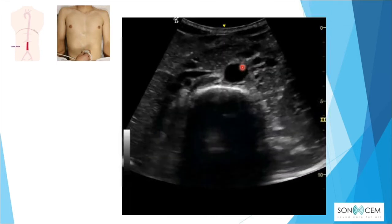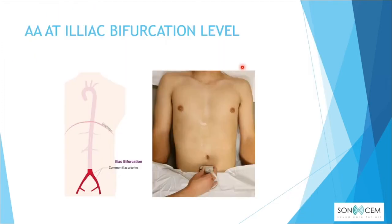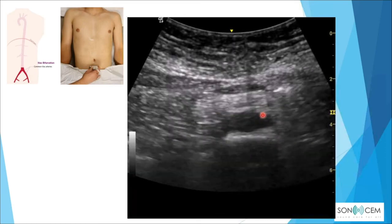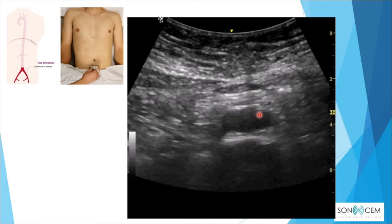This is the ultrasound clip of the aorta at the distal level. Moving further down to the bifurcation level, we can see the aortic bifurcation into the common iliac arteries. To measure, freeze the image and measure either the right or left common iliac artery, remembering that the diameter should not exceed 1.5 centimeters.